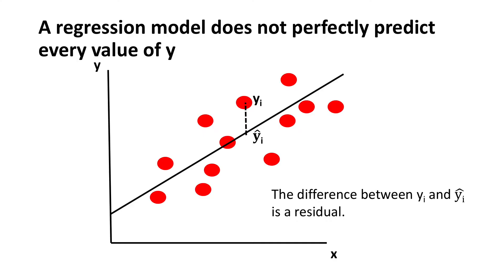The r squared is also based on the premise that the regression model does not perfectly predict every value of y. In this figure, you see an example of a residual. That's the difference between the actual value for the dependent variable, or actual value for y, and the amount that would be predicted based on the regression model. So you see on the line, there's a point that's labeled as yi hat. This is a value that would be predicted based on the regression analysis, whereas y subscript i is the actual value for the dependent variable. And again, this difference is what we call a residual.